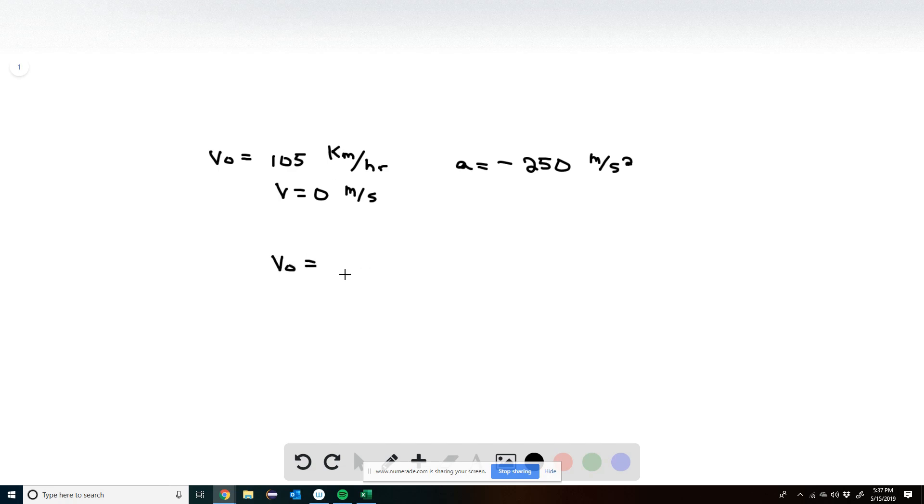So V0 is 105 kilometers per hour. I'm going to multiply this by a conversion factor. First, I'm going to change the kilometers into meters. Now in one kilometer, there's 1,000 meters. So that's that conversion. And the kilometers cancels.